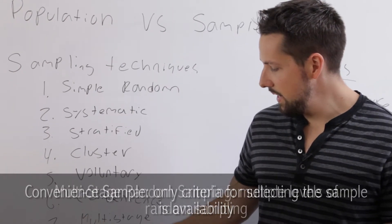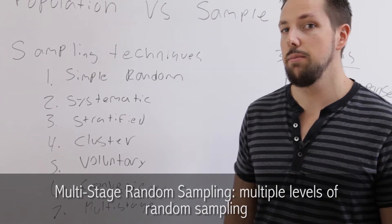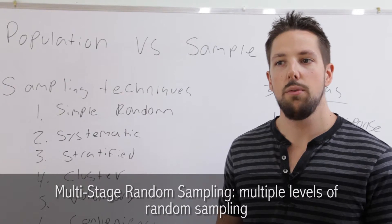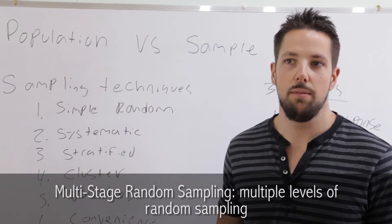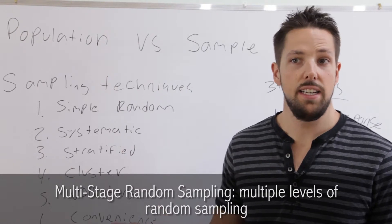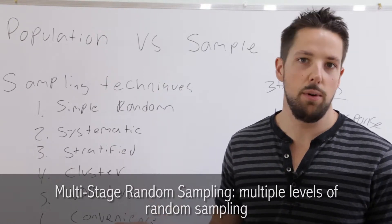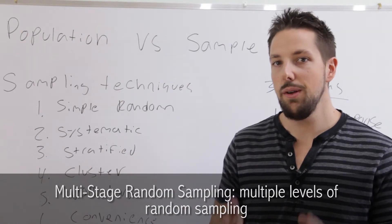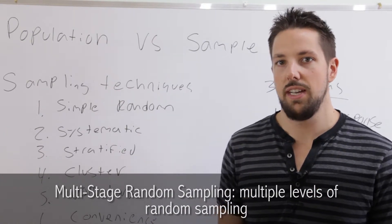The last type is called multi-stage random sampling. That's when you use different levels. Say we were looking to pick a school to represent Canada. We start by randomly picking a city in Canada. Then from the city, we randomly pick a district. Then from the district, we randomly pick a school. So you have different levels of all random sampling.